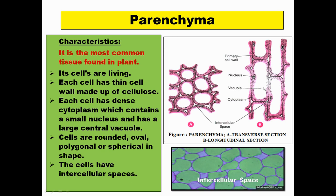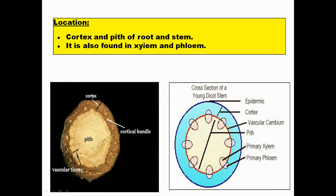Parenchyma cells have a big central vacuole and peripheral nucleus. You can see various shapes of parenchyma cells — polygonal, spherical — and the intercellular spaces are clearly visible. The cell wall is quite thin and made up of cellulose, while the cytoplasm is dense with a small peripherally located nucleus. In terms of location, they can be present at the outer section of the stem or root, referred to as the cortex region, and in the innermost section, the pith. They are also found as a component of xylem and phloem.